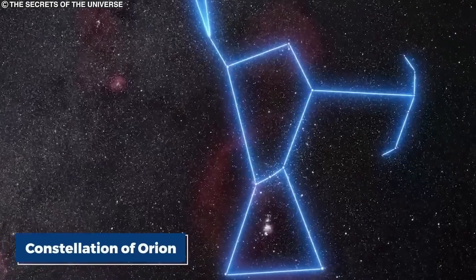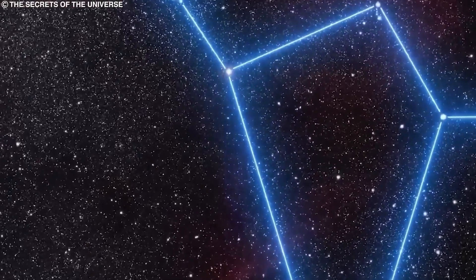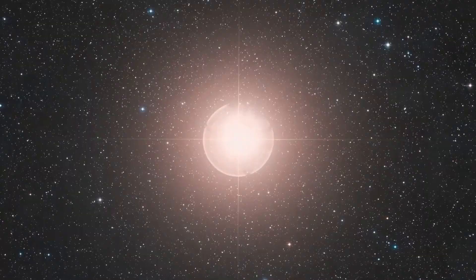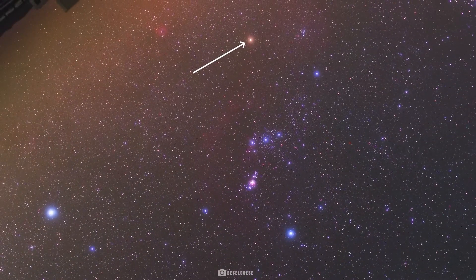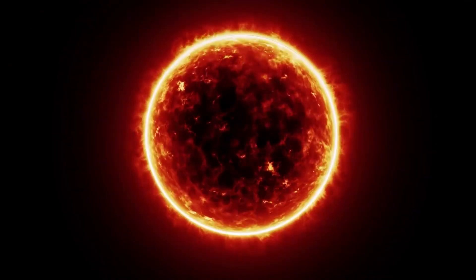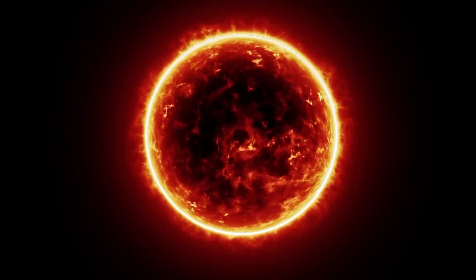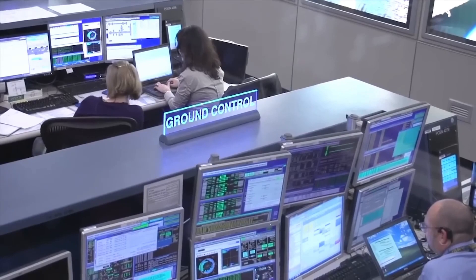Betelgeuse, located in the constellation Orion, is like the rock star of stars. It's one of the most recognizable and beloved celestial beings in the sky. Its vibrant red hue and prominent position have made it a favorite among both stargazers and astronomers.